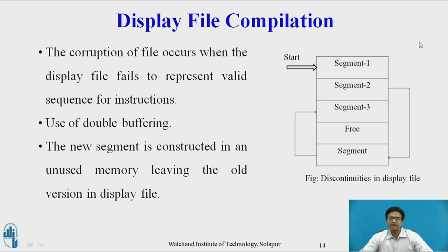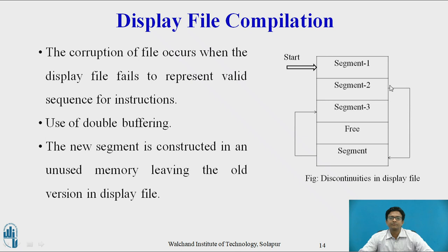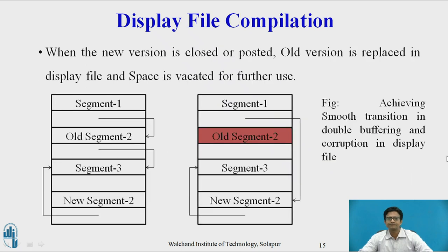Corruption of the file occurs when the display fails to represent a valid sequence of instructions. That is why we use double buffering, where a new segment is constructed in unused memory, leaving the old version in the display file. This is discontinuity in the display file: segment one is followed by segment two, then a new segment is added and mapped to segment three, leaving free space. When a new version is closed or posted, the old version is replaced in the display file and space is vacated for further use.